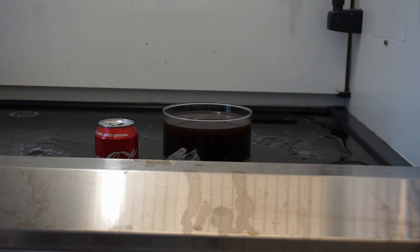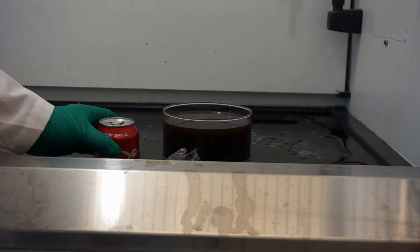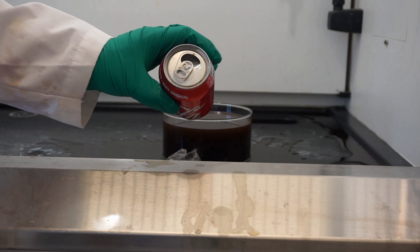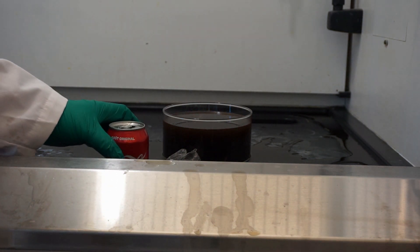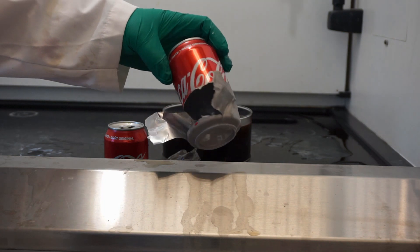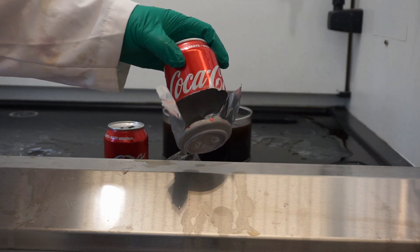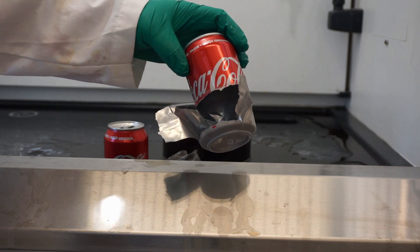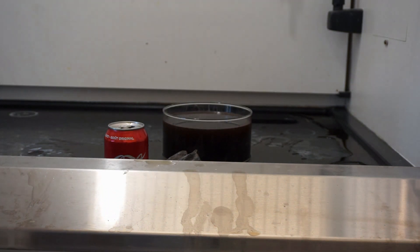Now one thing I did here that you didn't see me do is I actually popped the top of the pop can prior to putting it in the solution. The reason for that is, of course, because pop is under pressure because of the carbonation, which is also why it's acidic. And if you don't do that, you find out that you end up getting a blowout like this, and that sends pop all over the place with an explosive decompression of the inside of the pop can.